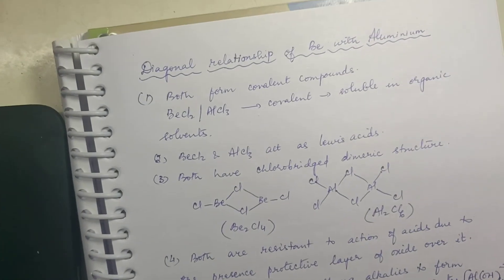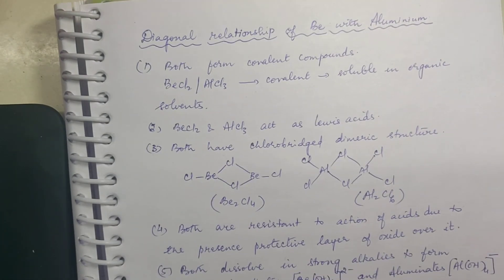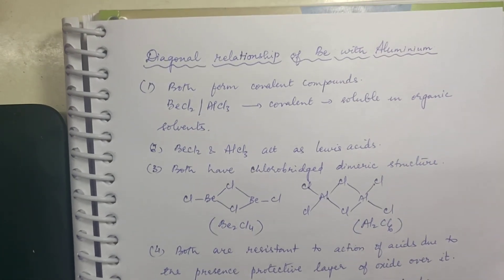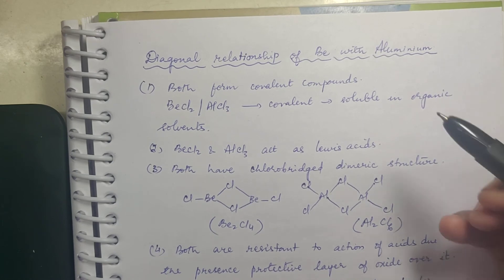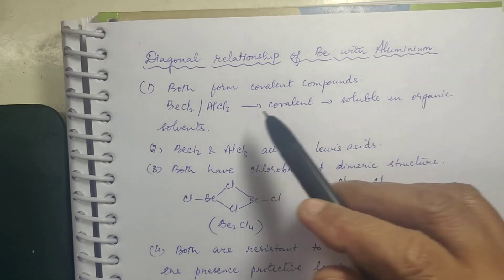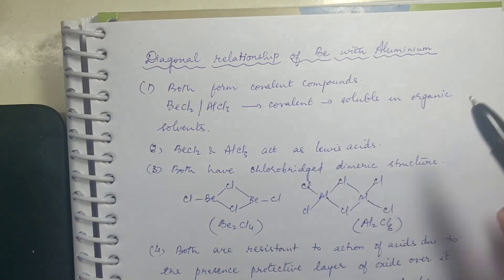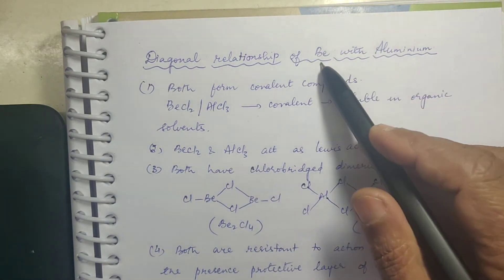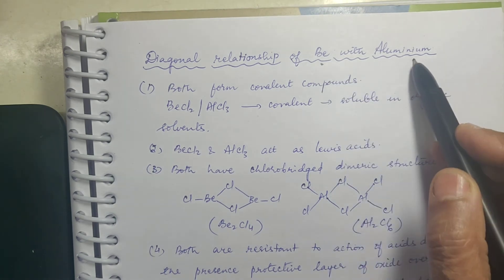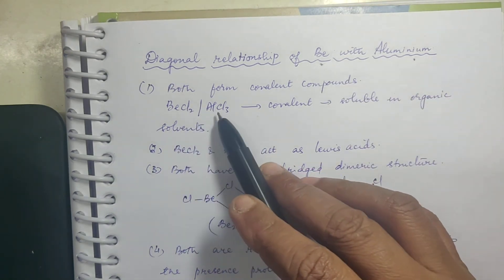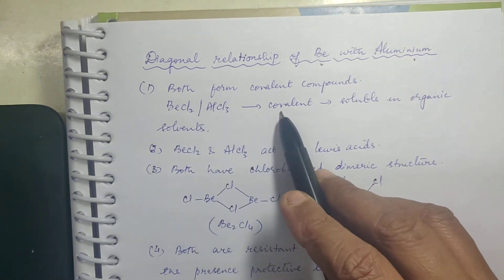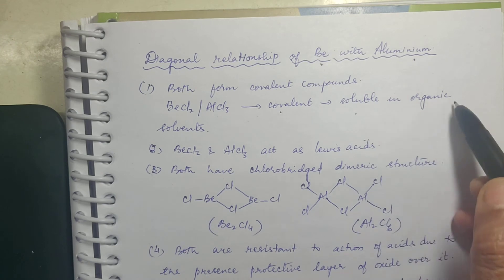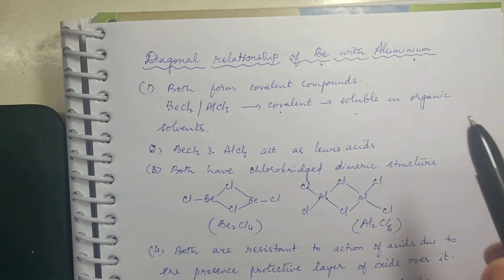Now let us see the diagonal relationship of beryllium with aluminium. Both beryllium and aluminium form covalent compounds — for example BeCl2 and AlCl3. Both are covalent and both are soluble in organic solvents.